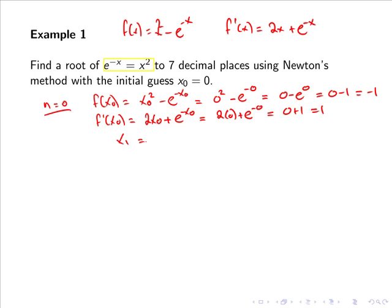Now x1 equals x0 minus f of x0 all over f dash of x0. So 0 minus minus 1 over 1, so 0 plus 1 or simply 1. So our new estimate for the root is x equals 1, and we have now finished the first iteration.